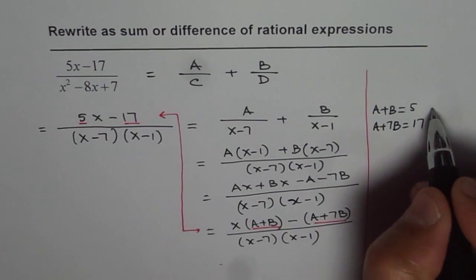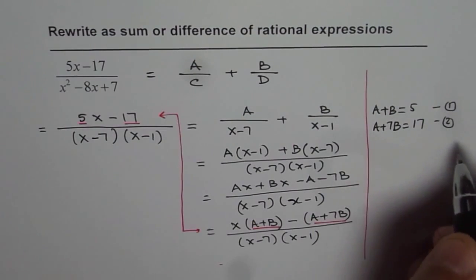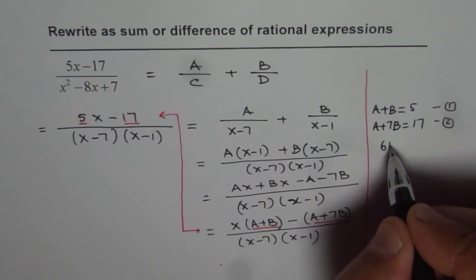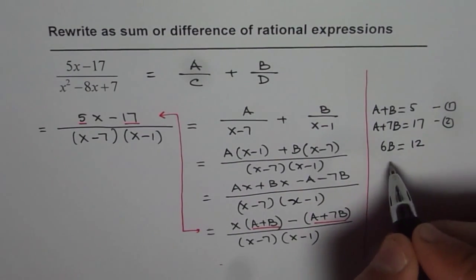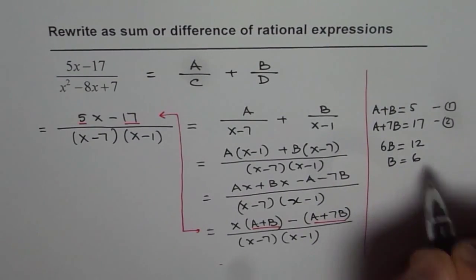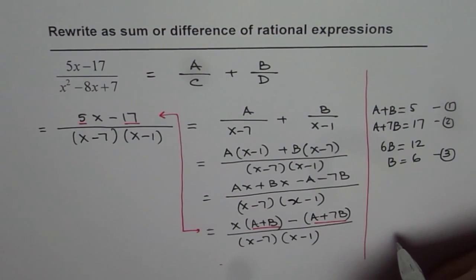So if I take away, let me call this as equation 1 and this as equation 2. So if I take away 1 from 2, then we get 6b equals to 17 minus 5 is 12 or b equals to 6. So we get equation 3, which is b equals to 6.